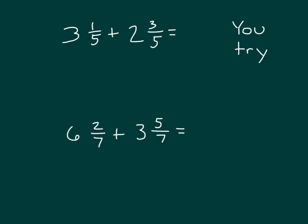Here are a few problems for you to try. Please pause the video while you do your work. For the first one, we'd have one fifth and three fifths more, adding like units to get four fifths. Then three ones along with two more ones gives five. The whole number sentence is: three and one fifth plus two and three fifths equals five and four fifths, which is in simplest form.